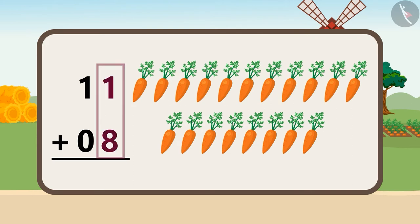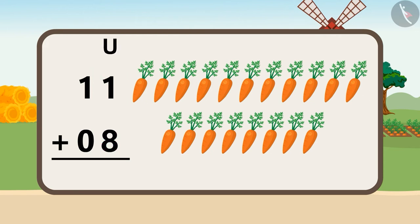The number written on the right hand side of any two-digit number is called the units place. We will first add the units of both numbers. Adding 8 to 1 is 9. We will write it below the units place.